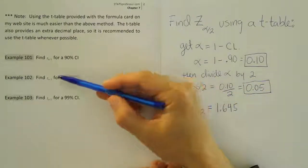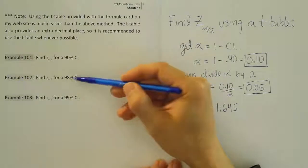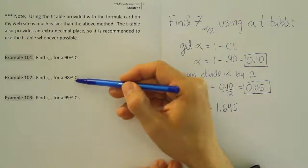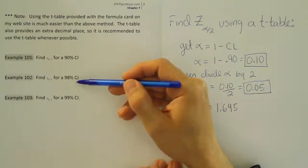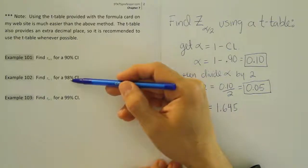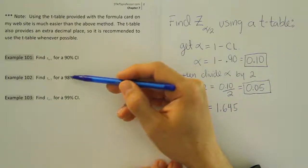For the next example, we're trying to find the z alpha divided by 2 value for a 98% confidence interval. Well, I can tell very quickly that since alpha and the confidence level have to add up to 100%, alpha here must be 2%. Because what's the difference between 100% and 98%? The answer is 2%.